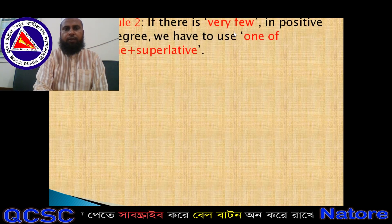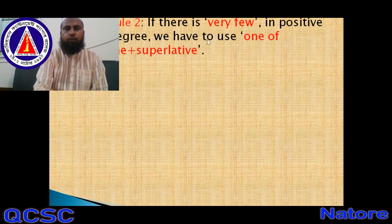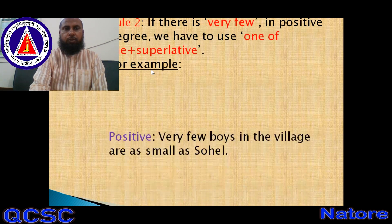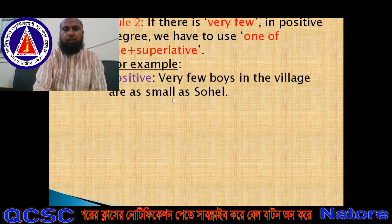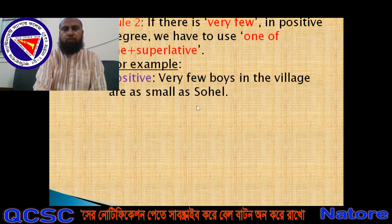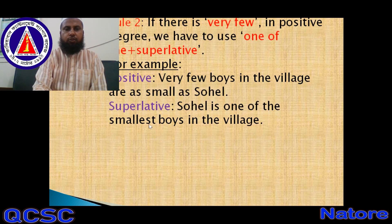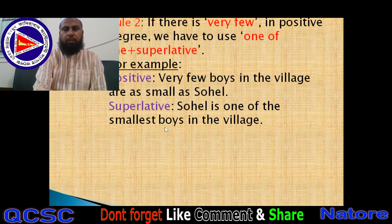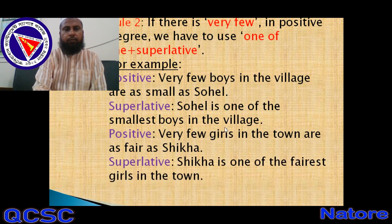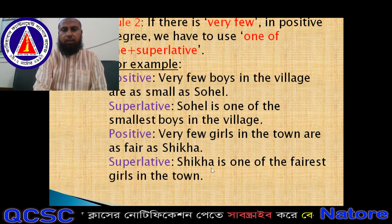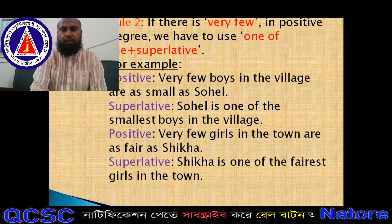Rule number two: if there is 'very few' in the positive degree, we have to use 'one of the + superlative.' Example: 'Very few boys in the village are as small as Shohel.' The answer should be: 'Shohel is one of the smallest boys in the village' — 'one of the' because there is 'very few.' Another example: 'Very few girls in the town are as fair as Sheikah.' The superlative should be: 'Sheikah is one of the fairest girls in the town.' After 'one of the,' the noun is in plural form.